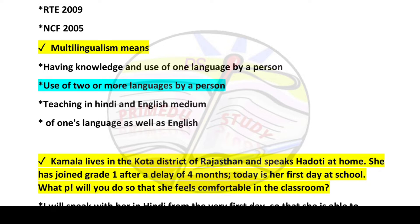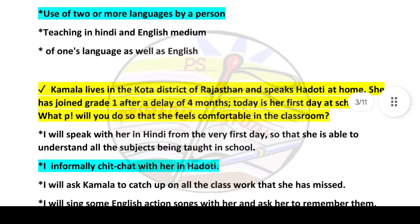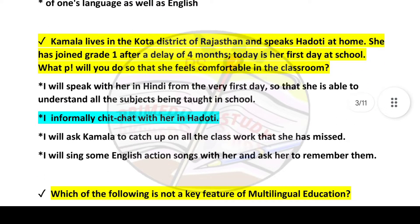Next question: Multilingualism means — answer is option number two: use of two or more languages by a person. Next question: Kamla lives in the Kota district of Rajasthan and speaks Hadothi at home. She has joined grade one after a delay of four months, and today is her first day at school.